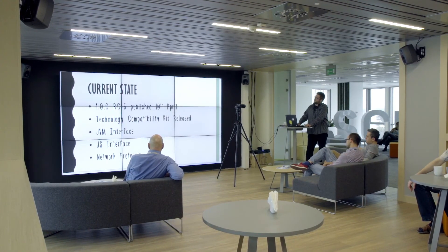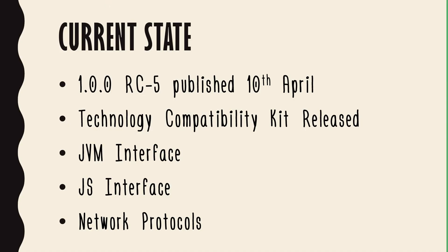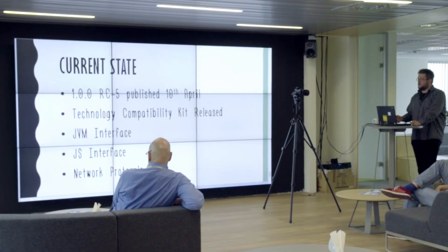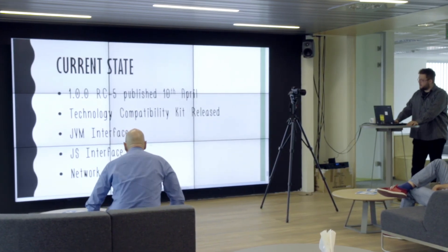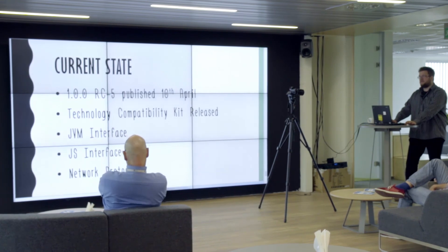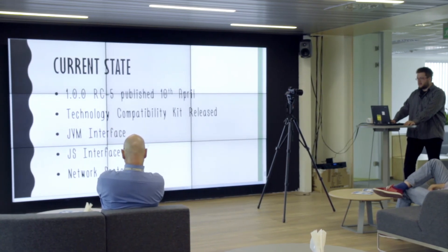What's the current state of the standard? It's in advanced development — the last release candidate, the fifth one, was published on the 10th of April. A technology compatibility kit was also released, which lets creators of implementations test their libraries to see if they comply with the standard. It contains a JVM interface, JS interfaces for the Node.js project, and instructions on how network protocols should be used.